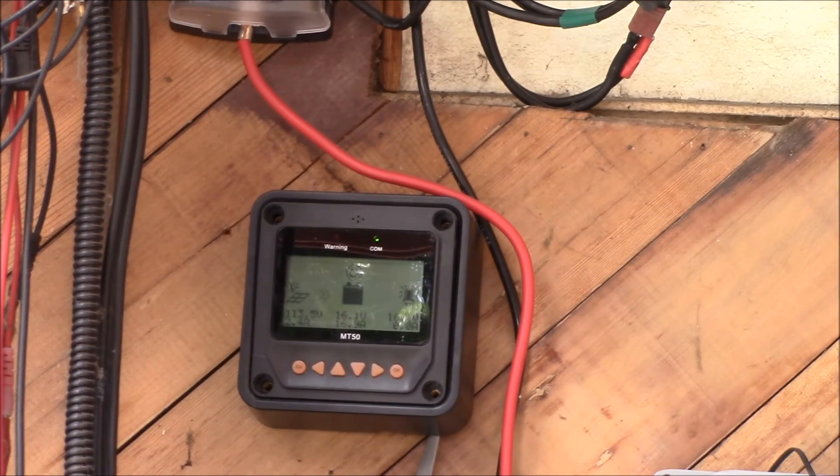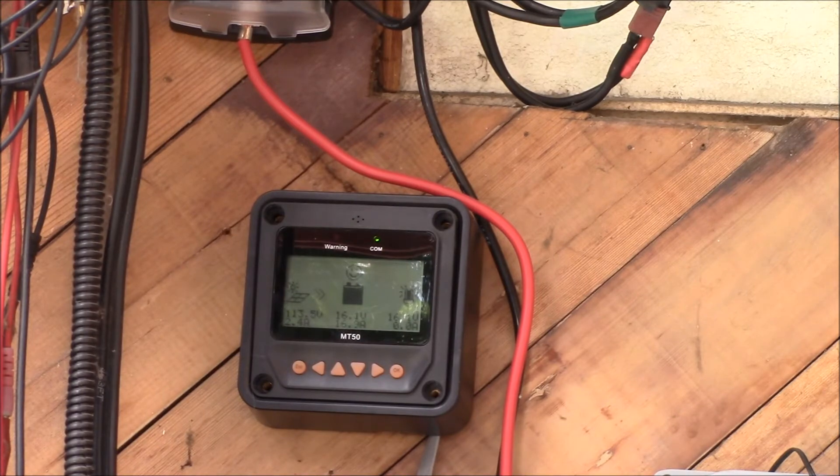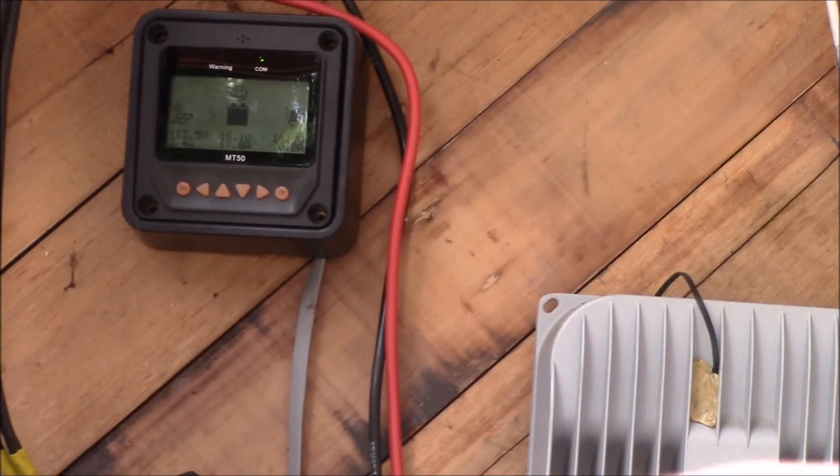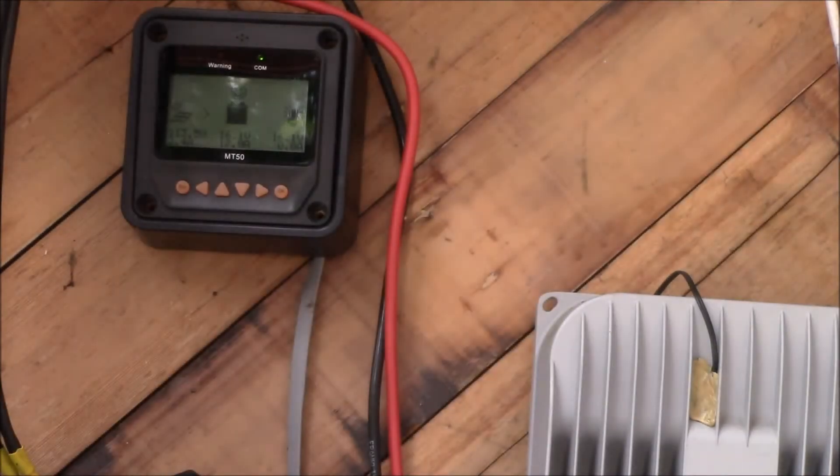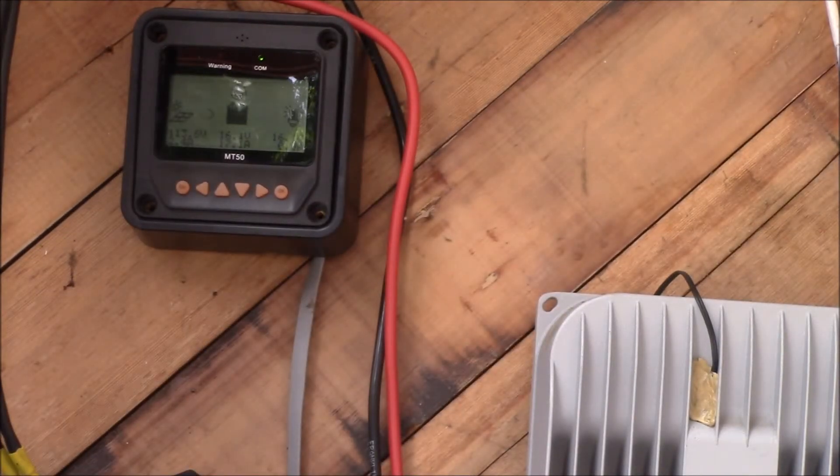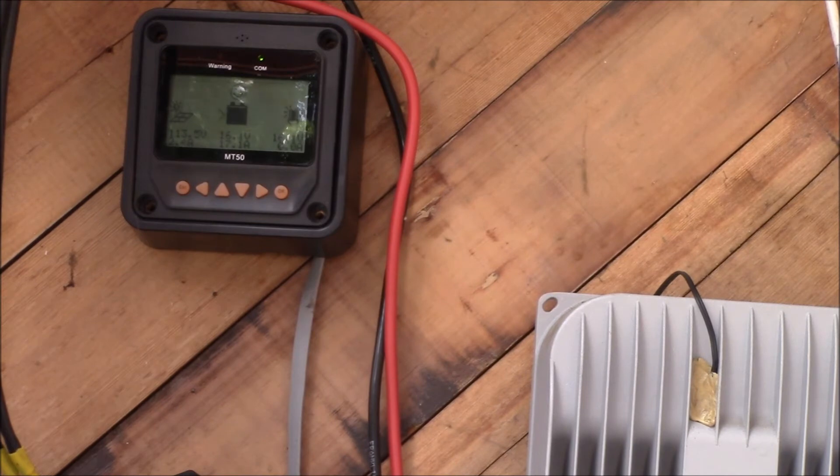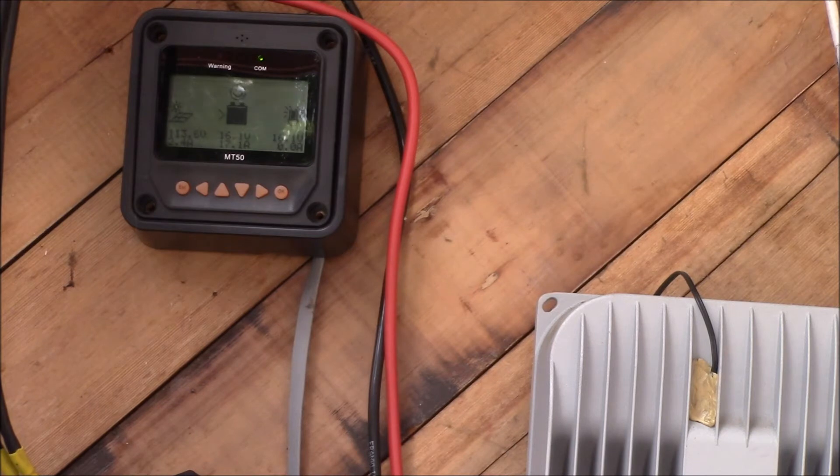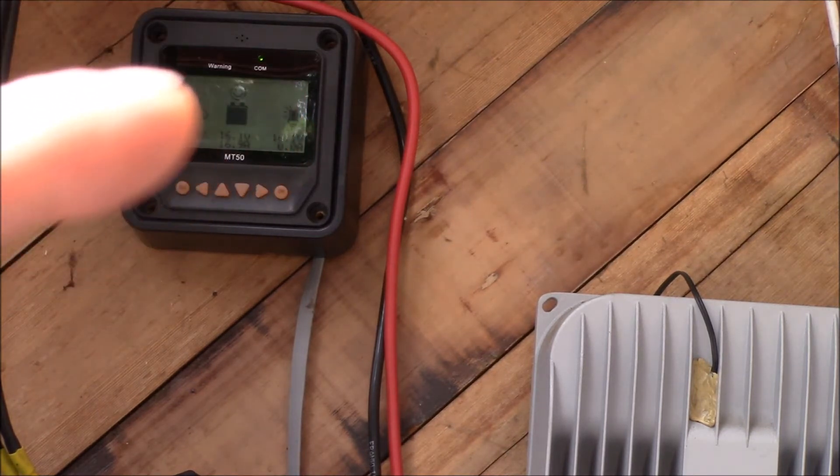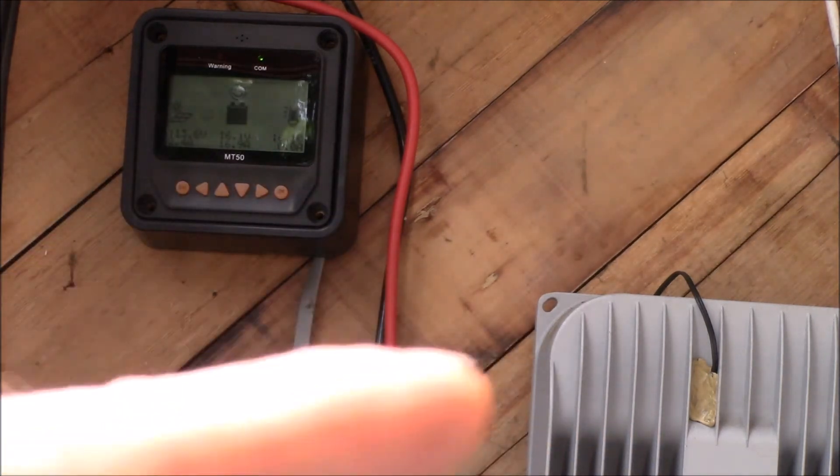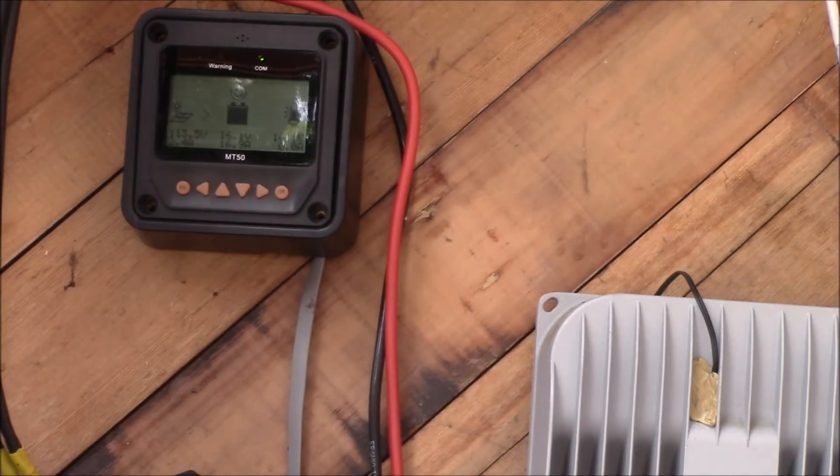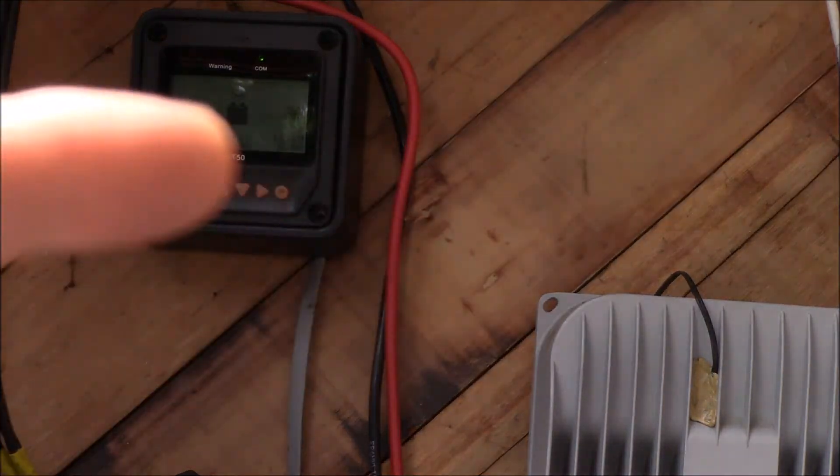Right now the EP solar is limiting me to about 640 watts maximum output because it's limited at 40 amps of charging current. Because of that I can only get 640 watts at 16 volts which is my battery voltage. That means I'm losing 360 watts with this controller because it's throttling.